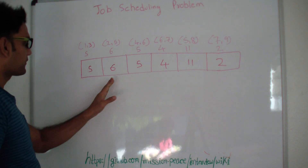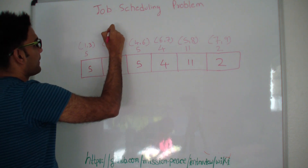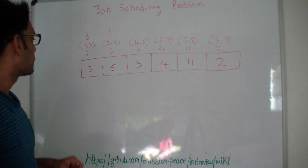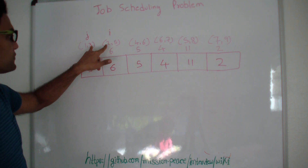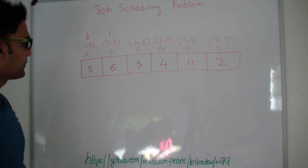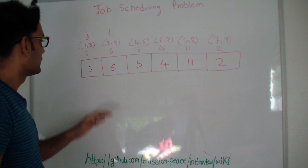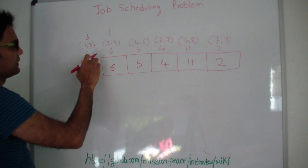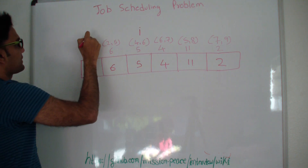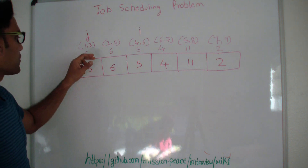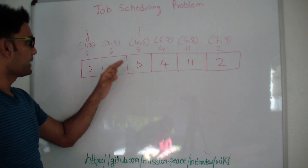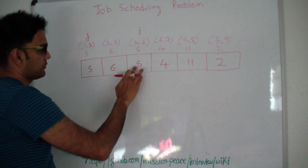Now let's start. This is our index I and this is our index J. We check if these two jobs overlap — if they do, this job and that job cannot be done together, so we do nothing for that particular pair and move I forward. Now job 1 (1–3) and job 3 (4–6) do not overlap, so the total amount we can make by picking these two jobs is 5 plus 5 = 10. So we update this entry to 10.